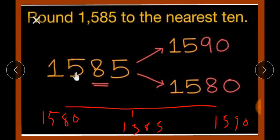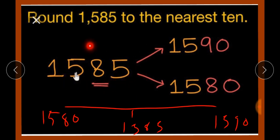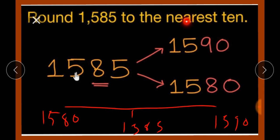Here we have the number 1,585. We need to round it to the nearest tens. We draw a number line and mark 1,580 and 1,590. We mark 1,585 in the middle. Since 1,585 is at the middle or greater than the middle number, it will go up. So 1,590 is the rounded number of 1,585 to the nearest tens.